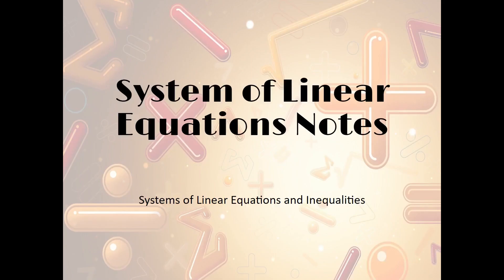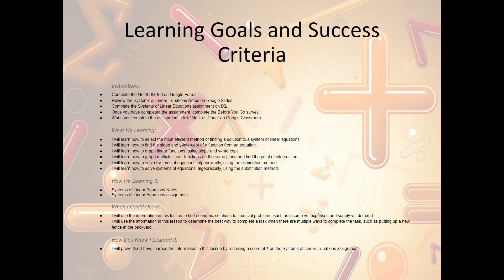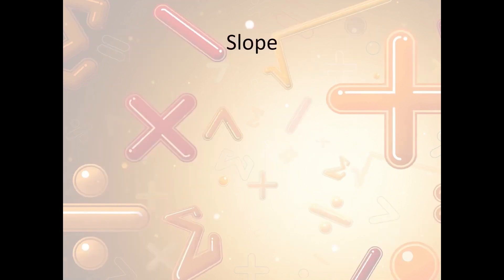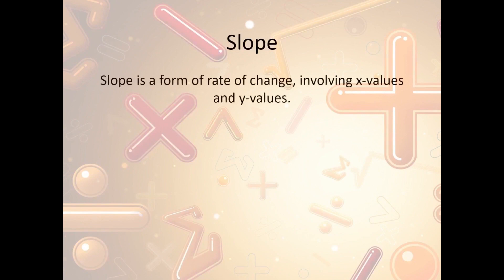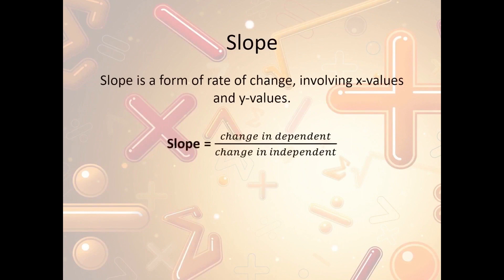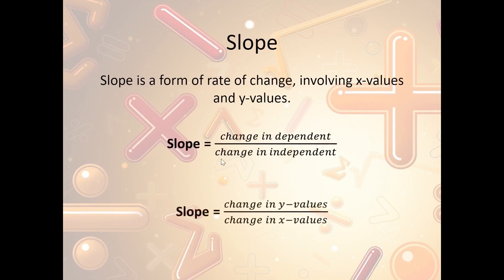Let's take a look now at the Systems of Linear Equations notes. The notes begin with the learning goals and success criteria. Now let's talk about slope. What is slope? Slope is a rate of change involving x values and y values. Slope is known as the change in the dependent variable over the change in the independent variable. That really means the slope is the change in the y values over the change in the x values — it's always y over x.